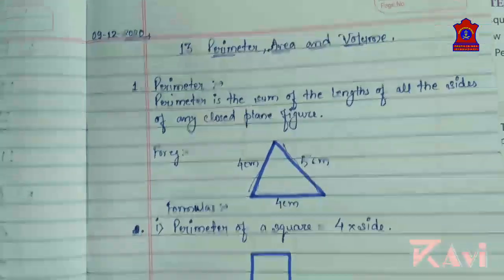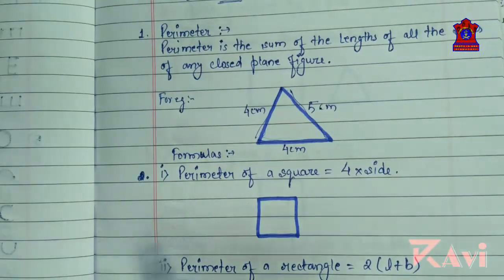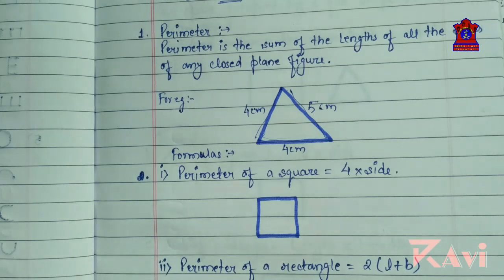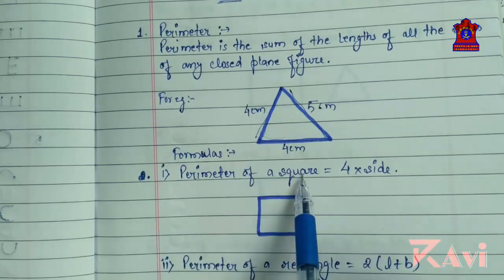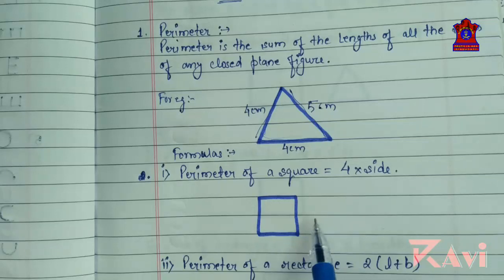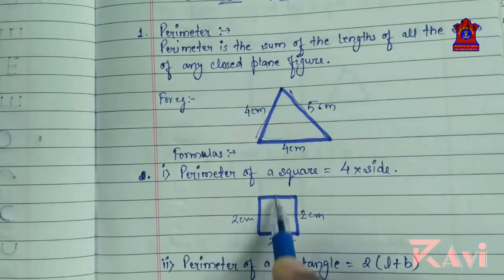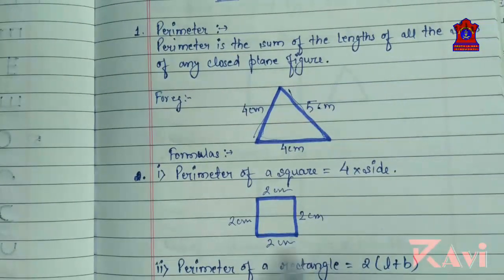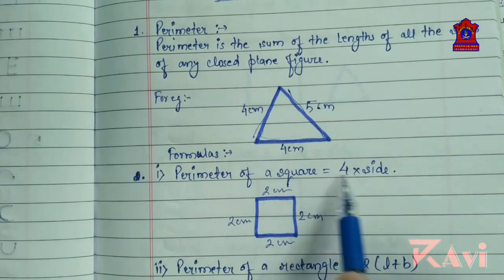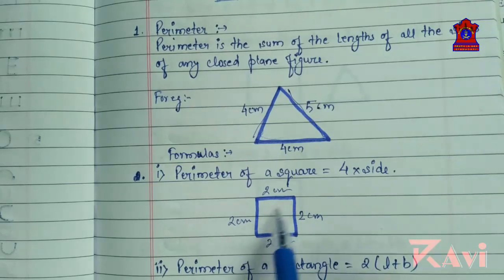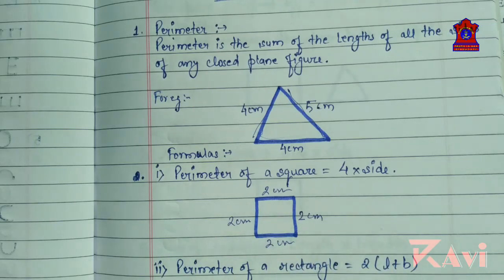There are a few formulas that you are going to use to find the perimeter of certain figures. In the previous class you just added and found your answer, but here we are going to use formulas. Perimeter of a square — a square has all four sides equal. If one side is 2 cm, then all sides are 2 cm. So, perimeter of a square equals 4 into side. If you multiply a side by 4, you will get the perimeter of a square.